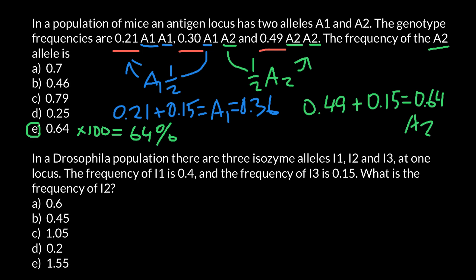In a Drosophila population, there are three isozyme alleles L1, L2 and L3 at one locus. The frequency of L1 allele is 0.4 and the frequency of the L3 allele is 0.15.